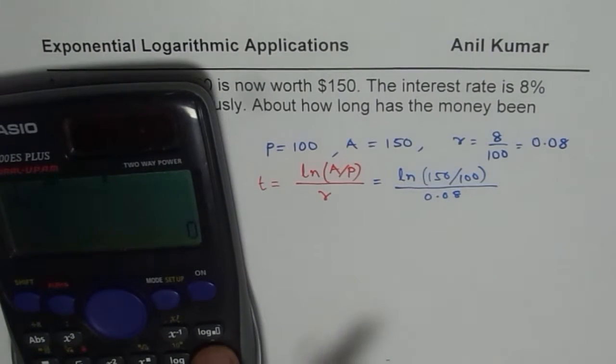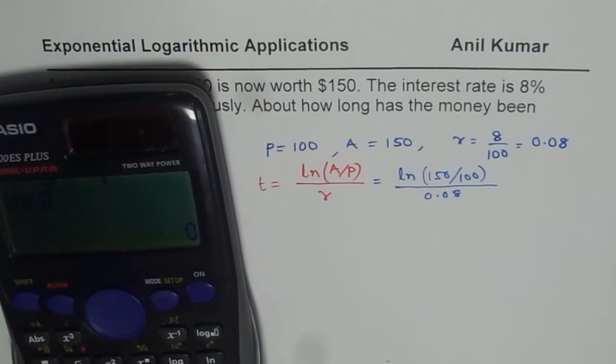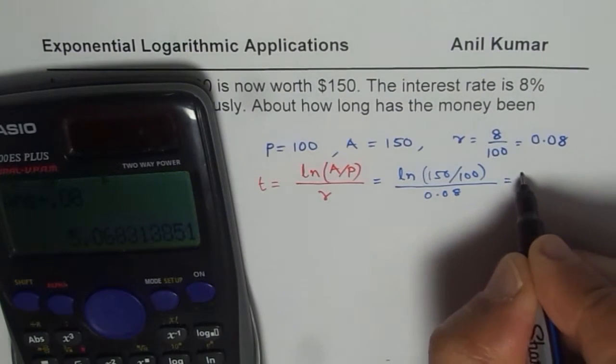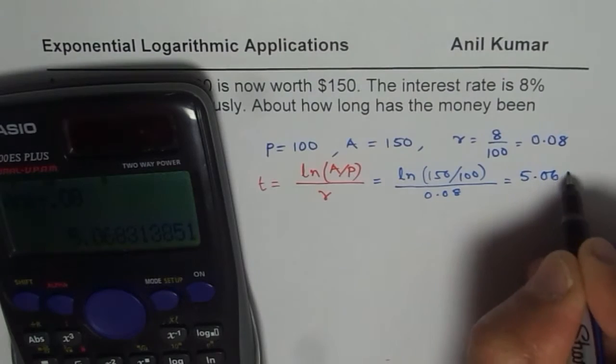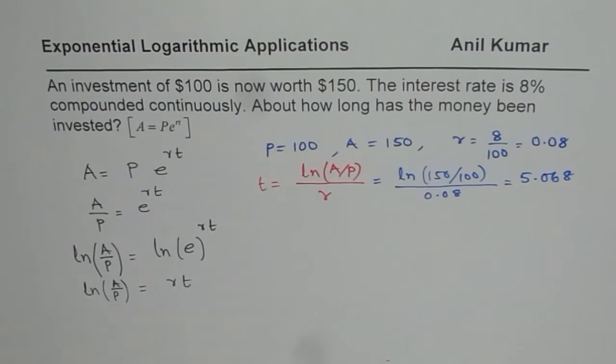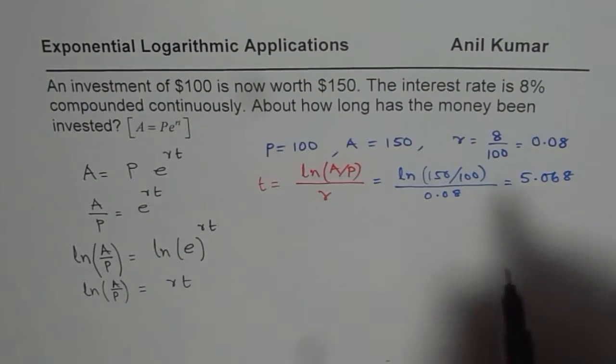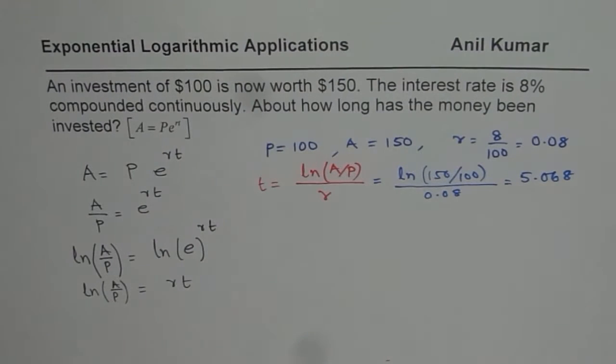We have ln within brackets 150 divided by 100, bracket close, equals to, and we'll divide this by 0.08 to get the answer, which is approximately 5.068. So approximately, you can say 5 years. So approximately 5 years is your answer.